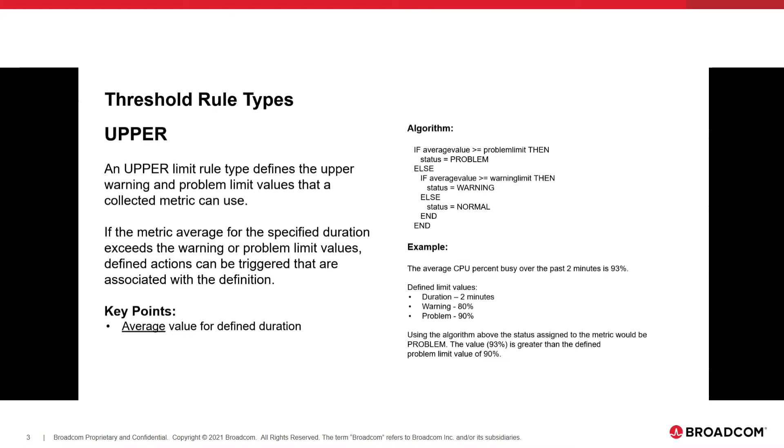So quick algorithm on the top that just shows you how we assign the status, and then we'll do a quick example here. If the average CPU percent busy over the last two minutes is 93, so what that two minutes means is we have a duration of two. For our threshold definition, we're going to say the duration is two minutes, we would like a warning at 80%, and we'd like it to be a problem at 90%. The average was 93. So where does that fall in? Well, based on the algorithm above, we would assign a status of problem because 93 is greater than 90.